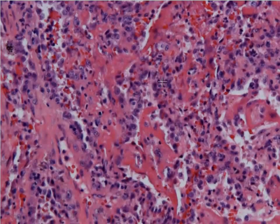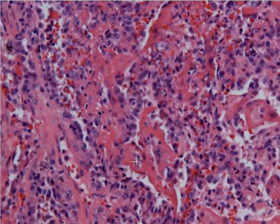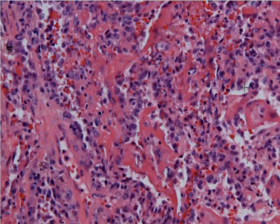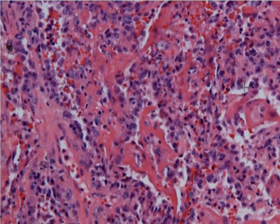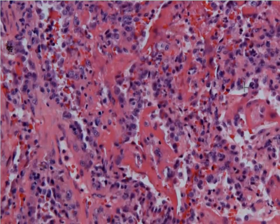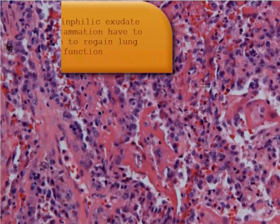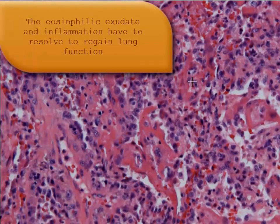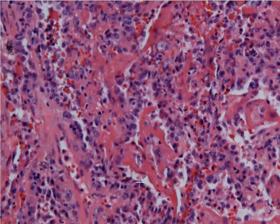This pink substance is what forms the barrier on the alveolar walls to oxygen diffusion. What it actually is is protein left over from dead and dying cells, bacteria, and lots of other material that thickens and coagulates within the alveolar spaces and sticks to these walls.